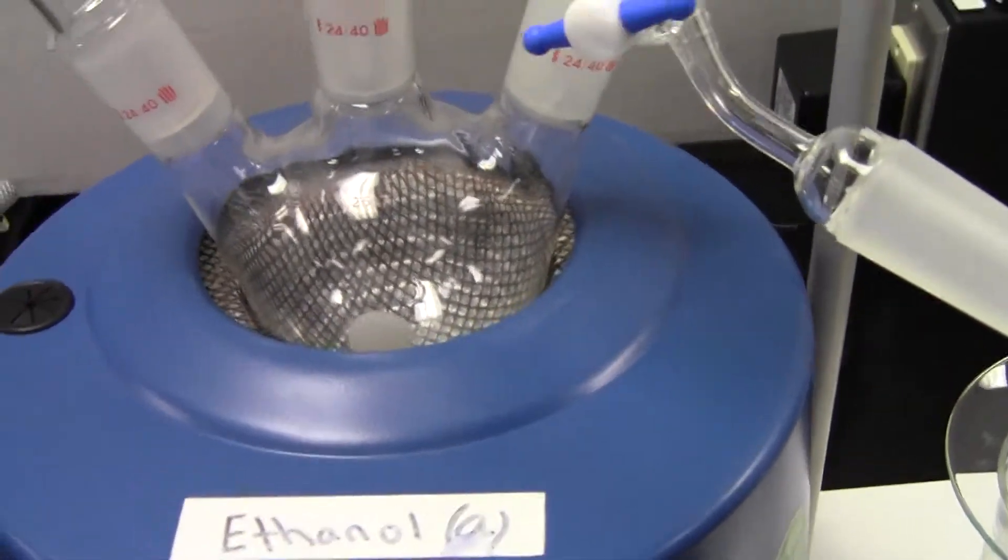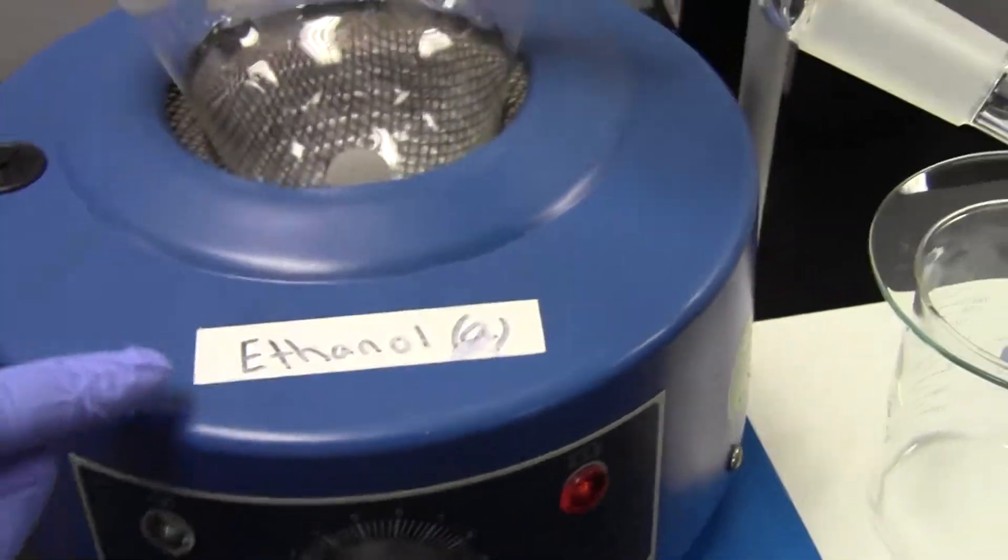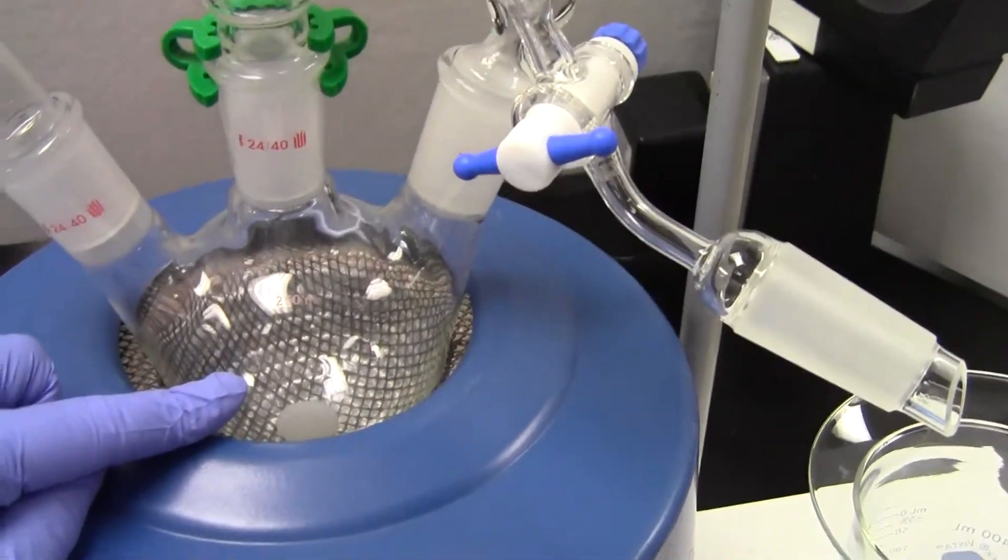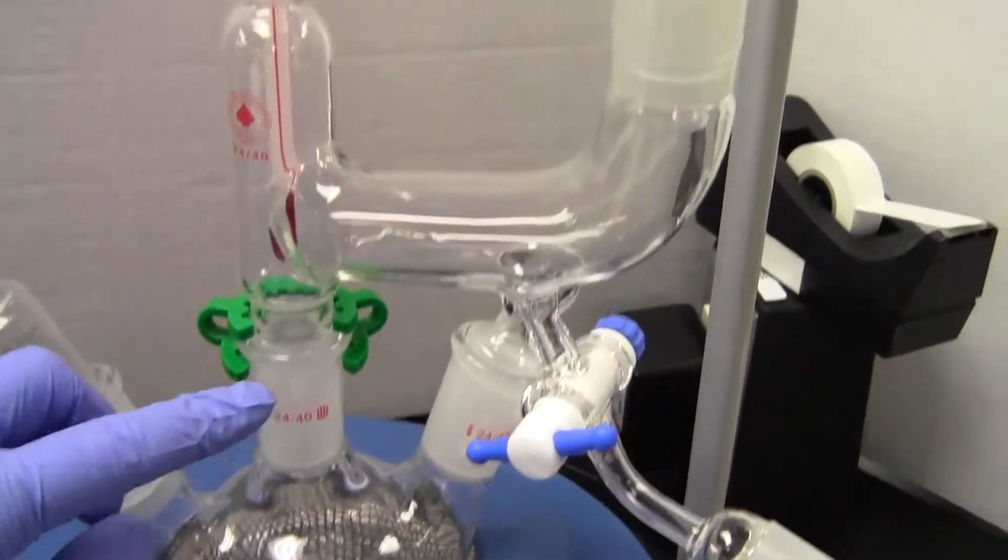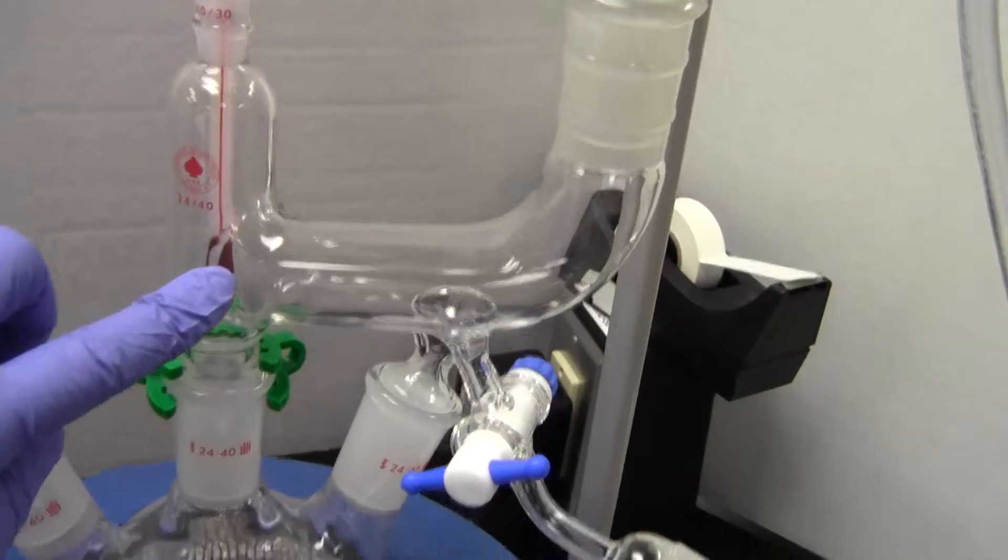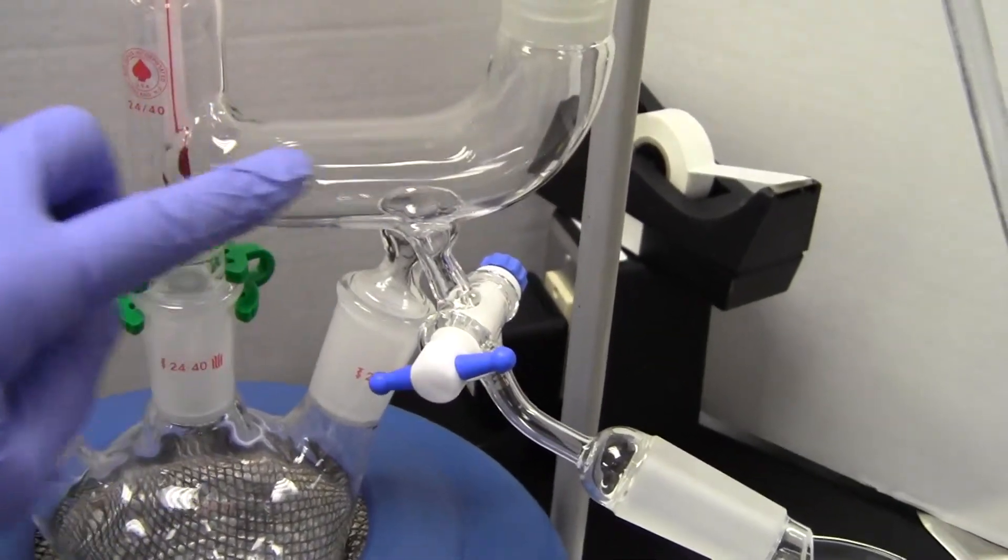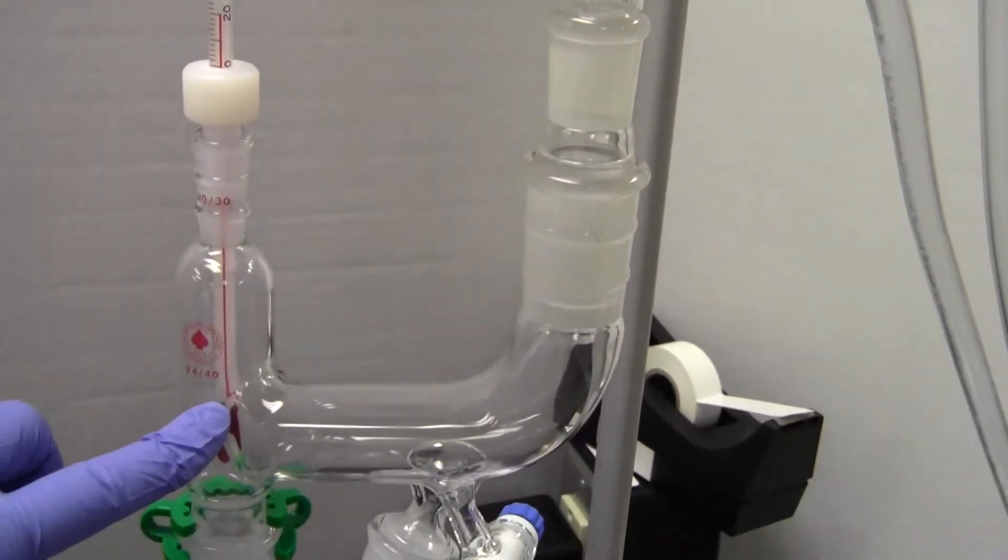Let's go back to this scenario where we have ethanol. Bring it to a boil. The thermometer is placed right at the exit to the condenser.